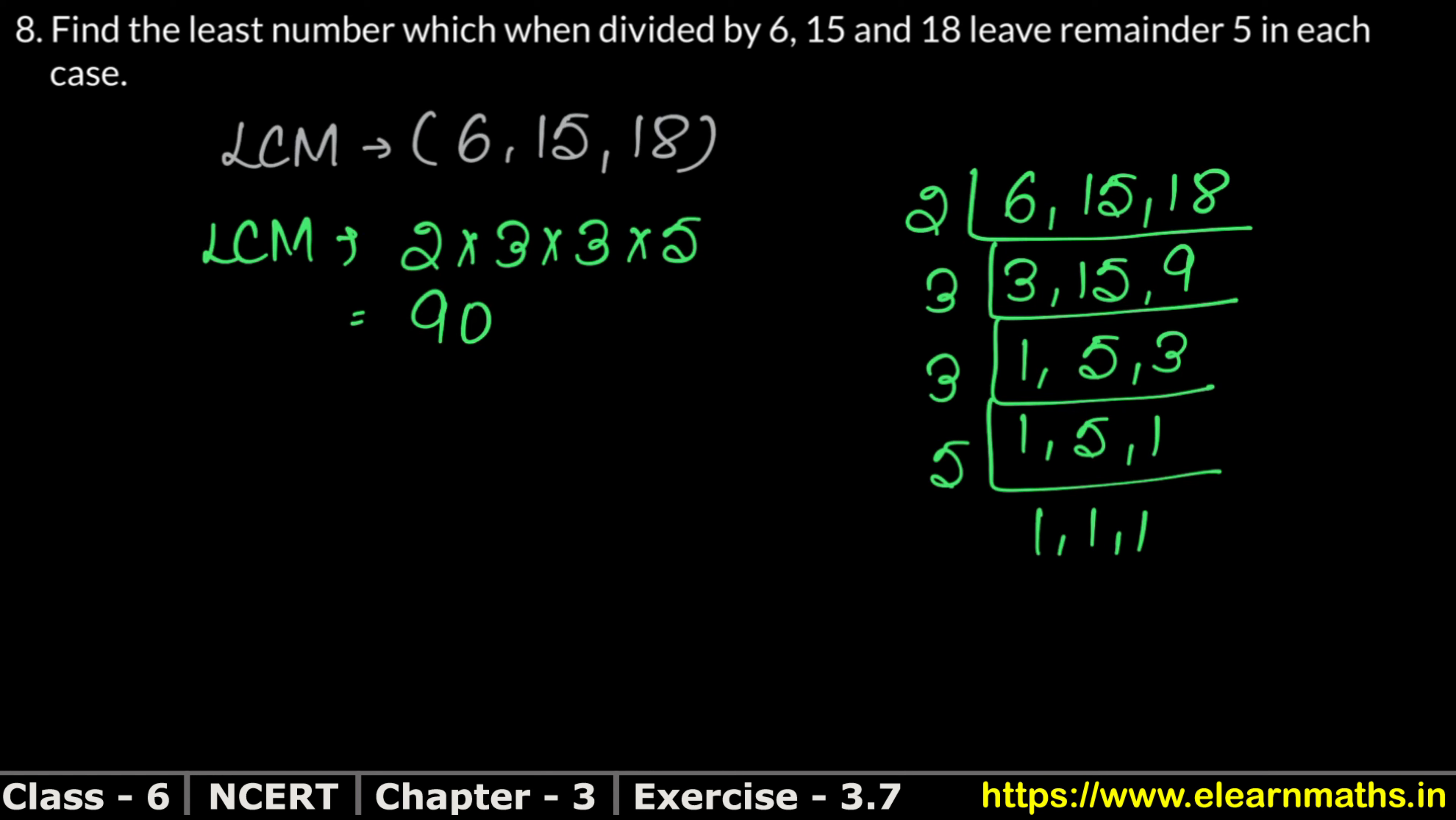So what will our required number be? Required number will be 90 plus 5. We will add 5 to get this remainder. So our number is 95. So 95 is such a number which you will divide from 6, 15 or 18, we will always get 5 remainder. We will get 5 left.